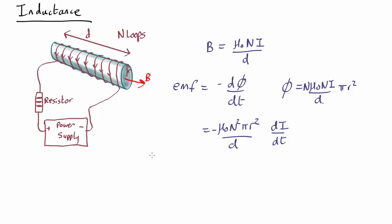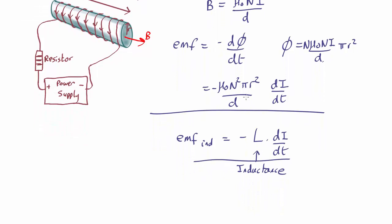Now this is called self-inductance, and it's usually written as emf = -L × dI/dt, where L is called the inductance or the self-inductance. If we compare this version of the equation with that one, we can see that the inductance in this particular case is equal to L = μ₀n²πr²/d.